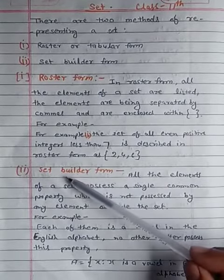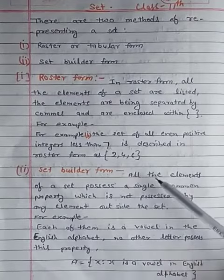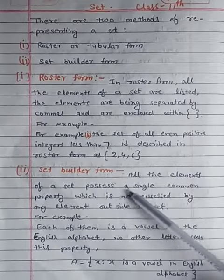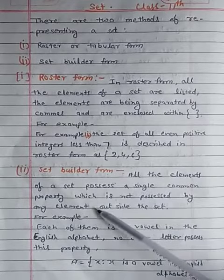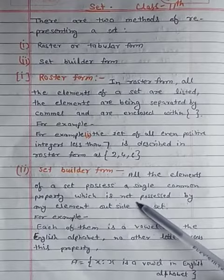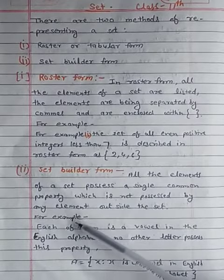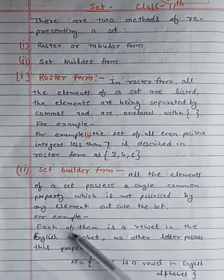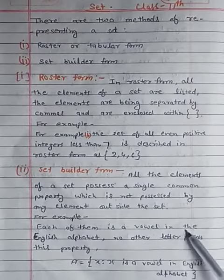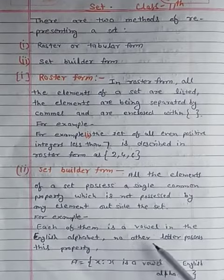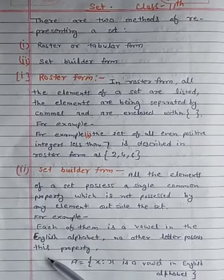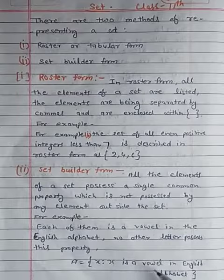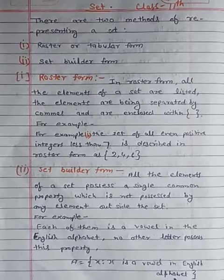Method second: set builder form. All the elements of a set possess a single common property which is not possessed by any element outside the set. For example, each of them is a vowel in the English alphabet. No other letter possesses this property. A = {x : x is a vowel in English alphabet}.